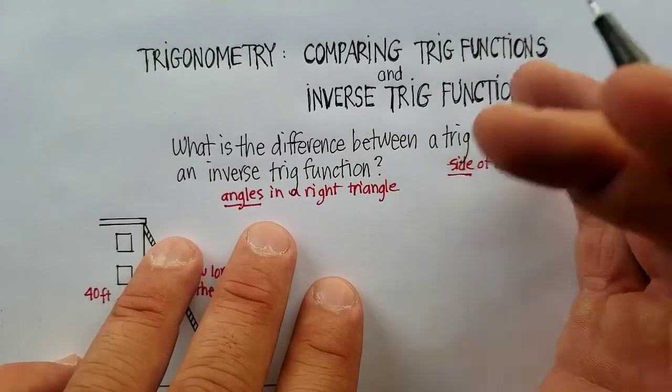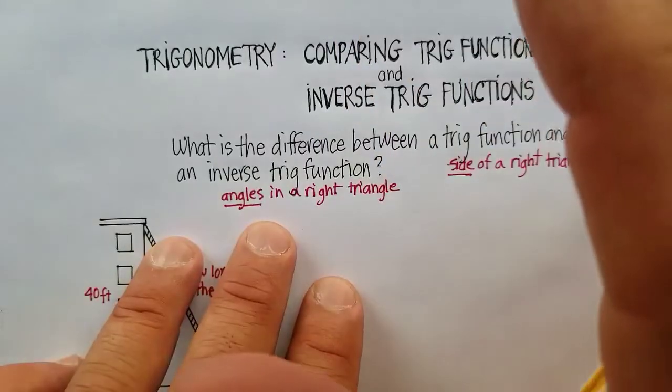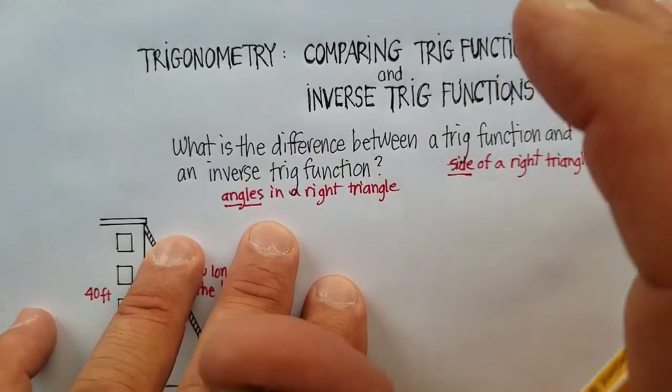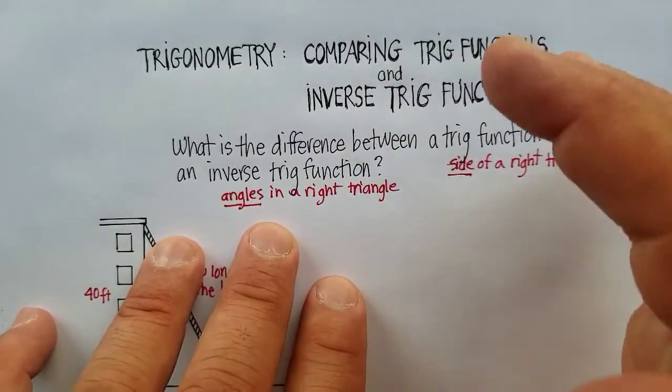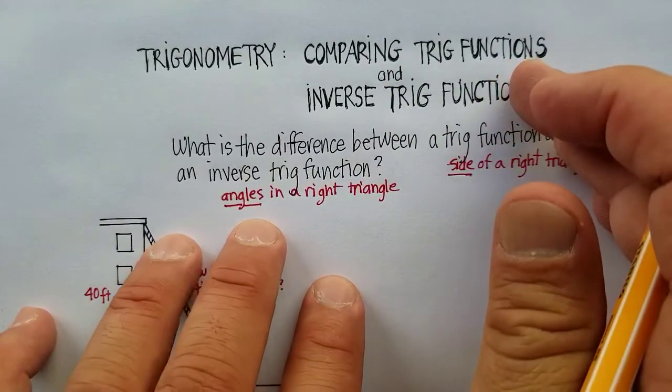And again, you know about SOHCAHTOA, which means that the three main trig functions are sine, cosine, and tangent, at least the ones that we're going to cover in this class.